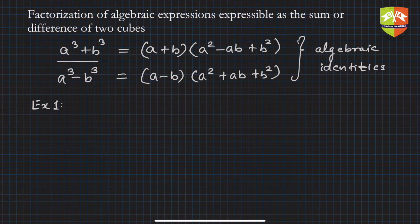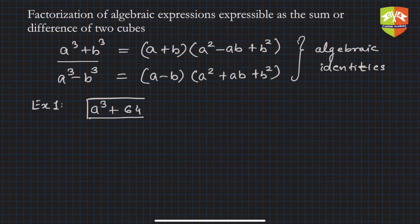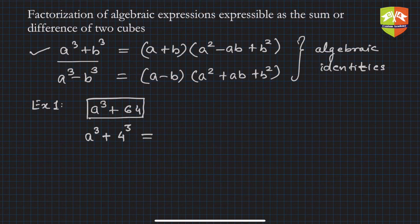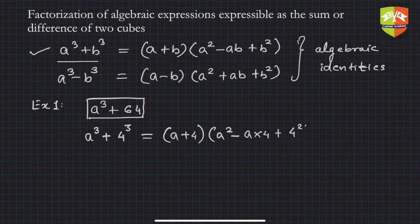Let's take Example 1: if we have a³ + 64, this is an algebraic expression we need to factorize. This can be written as a³, and if you notice 64 is nothing but 4³, which fits into this scheme.